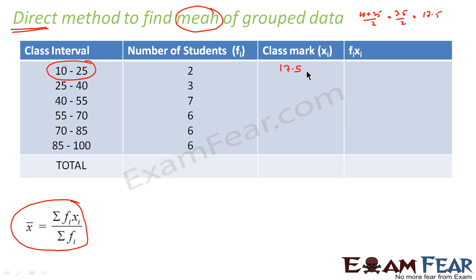In the direct method, we just find the class mark, that is xi, that we assume is the middle of the class interval, and then fi is already given. We find the fi xi and then we use the formula summation of fi xi by fi. We will solve this problem.